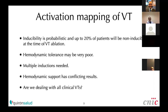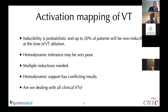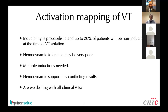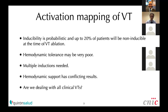Activation mapping of VT is very nice, but we need to recognize that inducibility of VT is probabilistic, and up to 20% of our patients will be non-inducible at the time of ablation. Even if they are inducible, hemodynamic tolerance may be very poor, requiring multiple inductions and shocks. Hemodynamic support has had conflicting results, and fast VTs will not be easily mapped. We are all aware of the limitations of pace mapping.